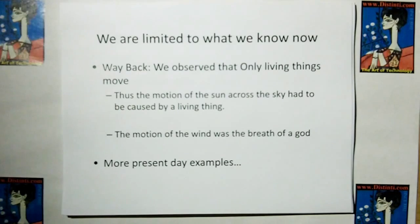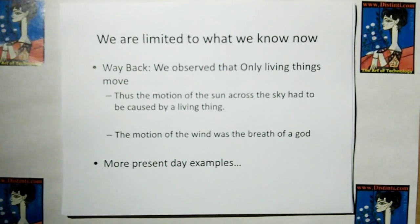For example, if we go way back in time, we observe that only living things move. So what did we do? We assumed that because the sun moved across the sky that there had to be a living thing pushing it, and therefore we came up with a sun god.